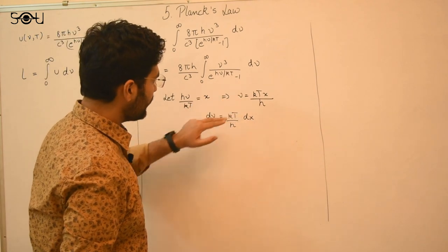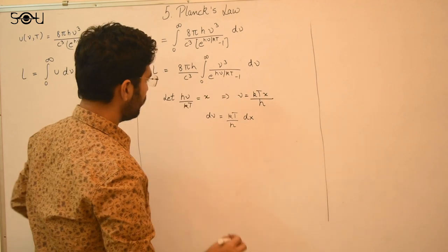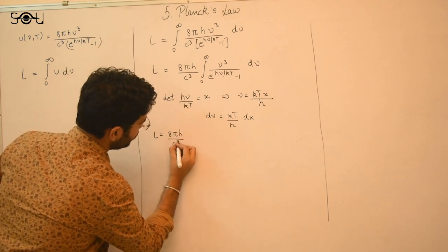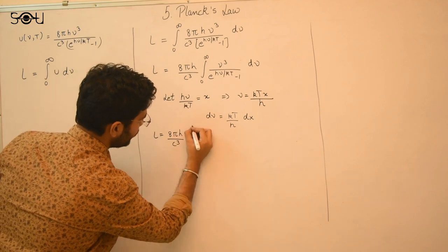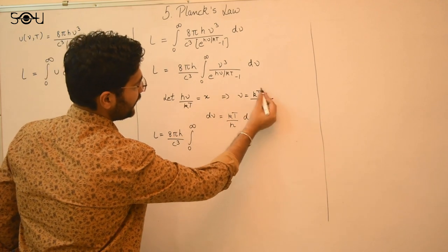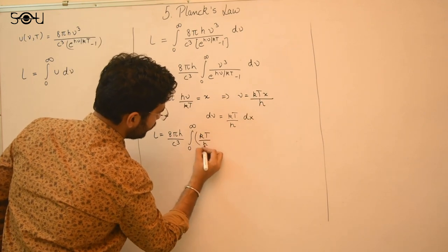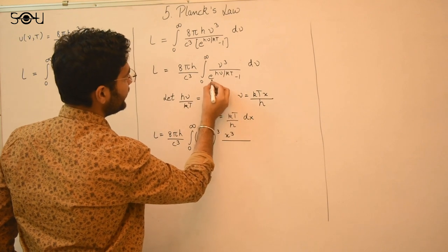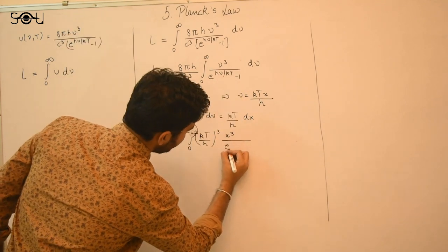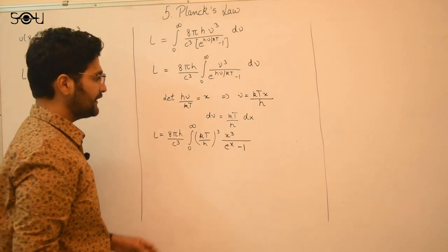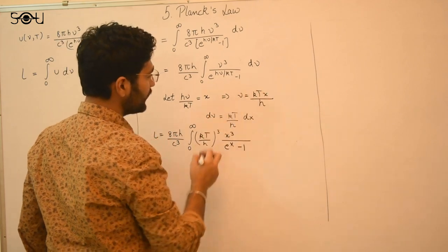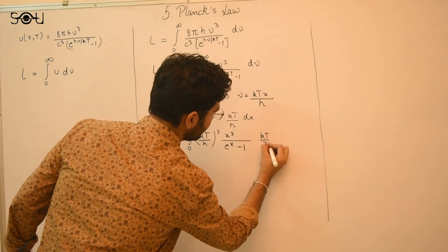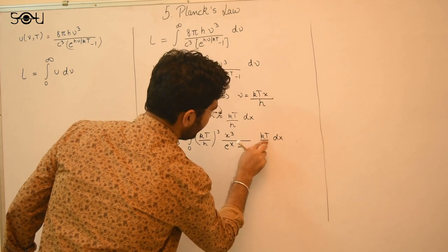Now we put the values of ν and dν in terms of x and dx. This gives L equal to 8πh over c³, with the integral from 0 to infinity of (kT/h)³ · x³ divided by (e^x − 1), since hν/kT equals x, times dν = kT/h · dx.